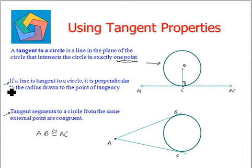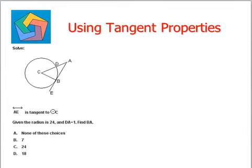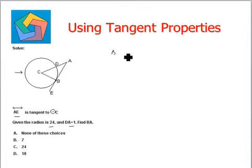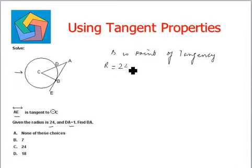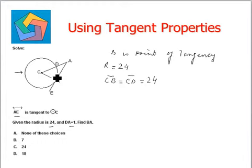Using these two properties, we will be doing some questions. The first problem says: solve. We are given a circle. AE is a tangent to the circle with center C. The radius is 24 and DA equals 1. B is the point of tangency. Since the radius R equals 24, CB equals CD equals 24. AD is given as 1, so CA equals CD plus DA, which is 24 plus 1, equals 25.